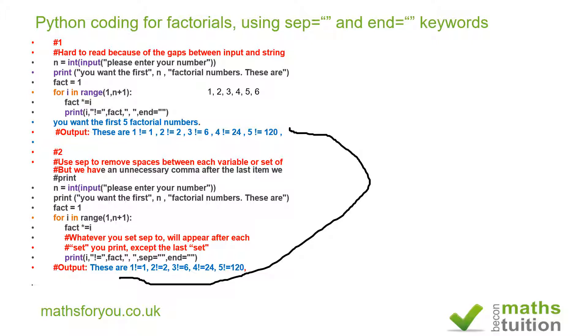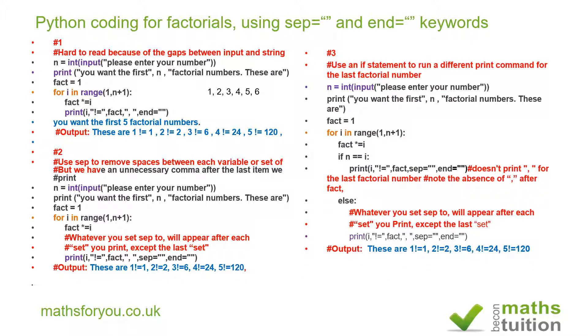Now for version three. If you've been looking here, we've got a comma at the end, so we want to get rid of the comma. To do that, we now introduce this if statement. If n is equal to i, we know n is five, so when i assumes the number five...